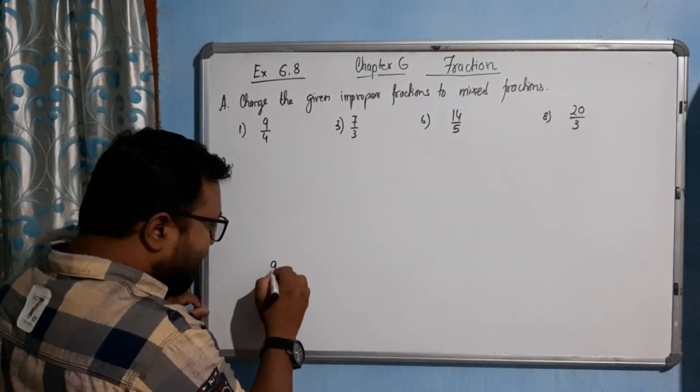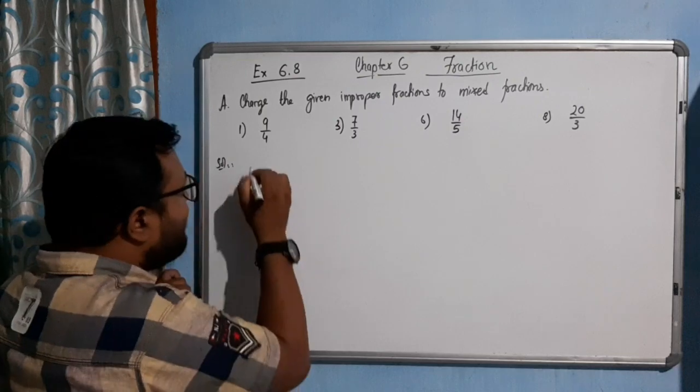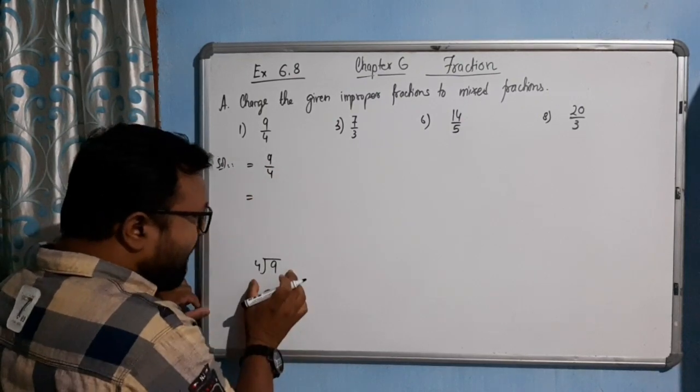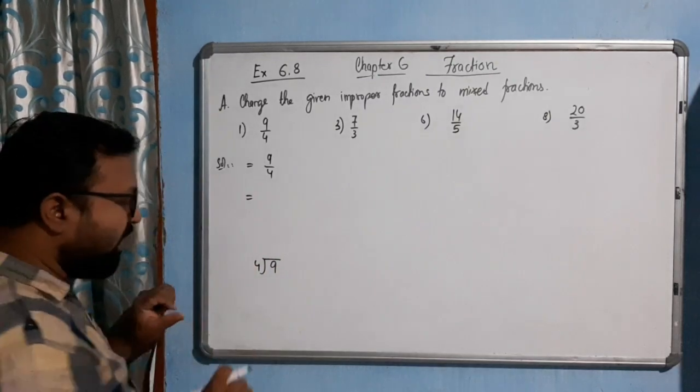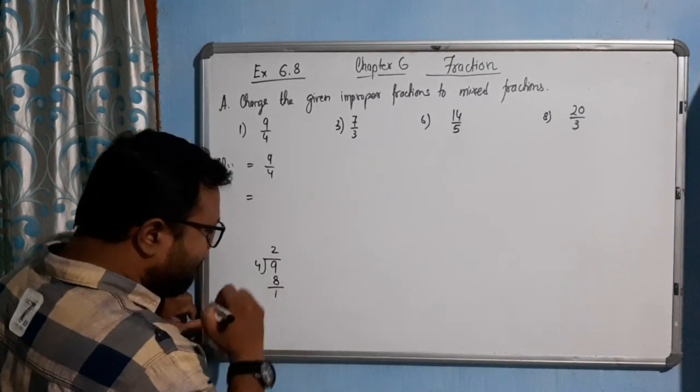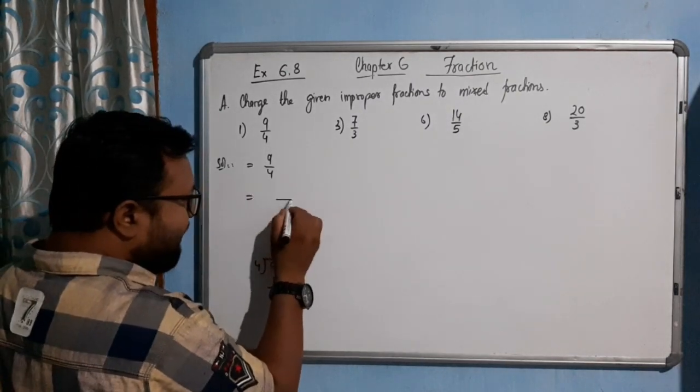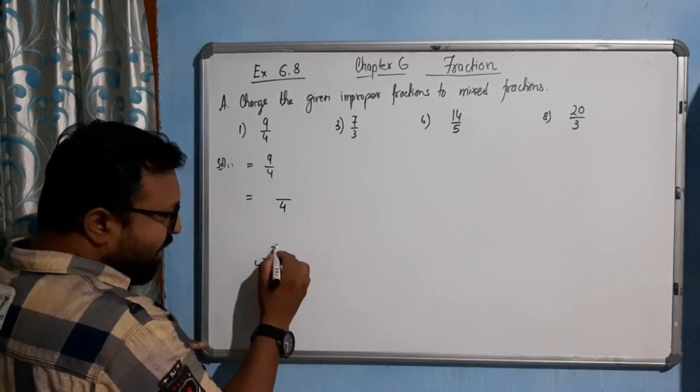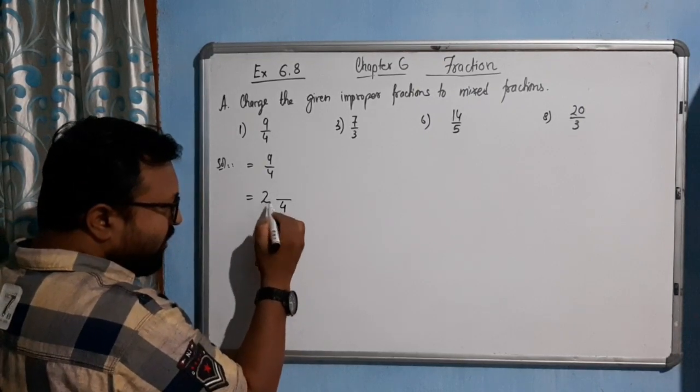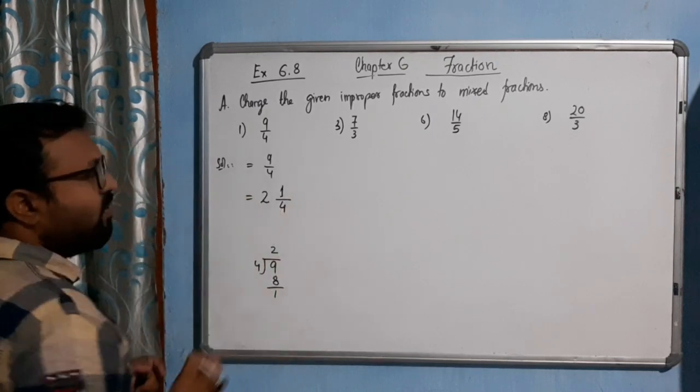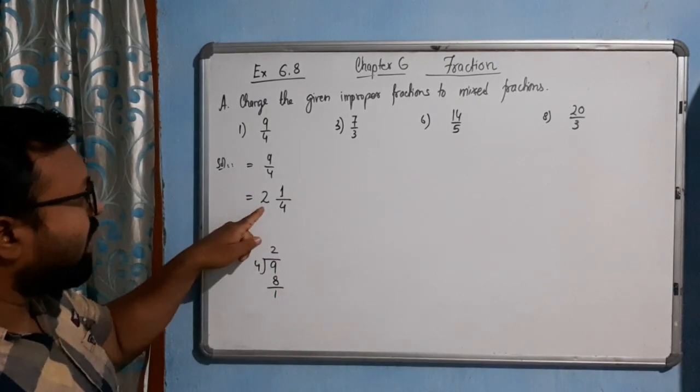See the solution. How will we convert this one? Directly we will use 9 by 4, so 9 is divided by 4. Let me write here 9 by 4. Simply show the division in your copy. Now, 4 into 8 is how much? 2. Remember that 4 is already there in the denominator, so we will write 4. This quotient will become our whole number, which is 2, and this remainder will come here.